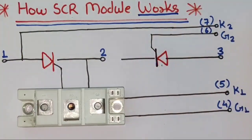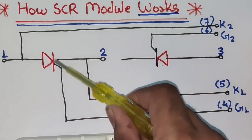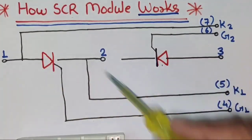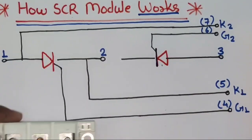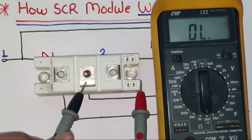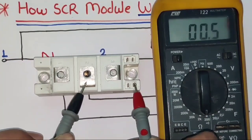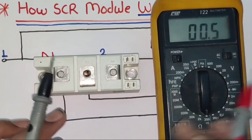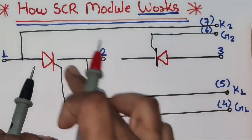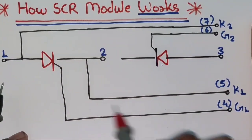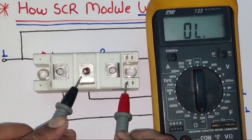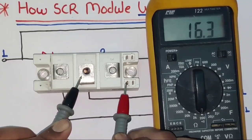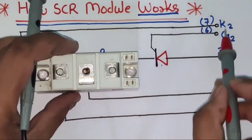Between terminals 1 and 2 we connect one SCR, which will operate only when we provide gate pulse between 4 and 5. Reading the drawing: terminal 4 connects to the first SCR gate terminal, and terminal 5 connects directly to terminal 2. So when we check resistance, terminals 2 and 5 should show a short. You can see here it is showing shorting. Terminal 4 connects to the first SCR gate, so resistance between terminals 4 and 2 should show the SCR value — which should be 12 to 16 ohms.